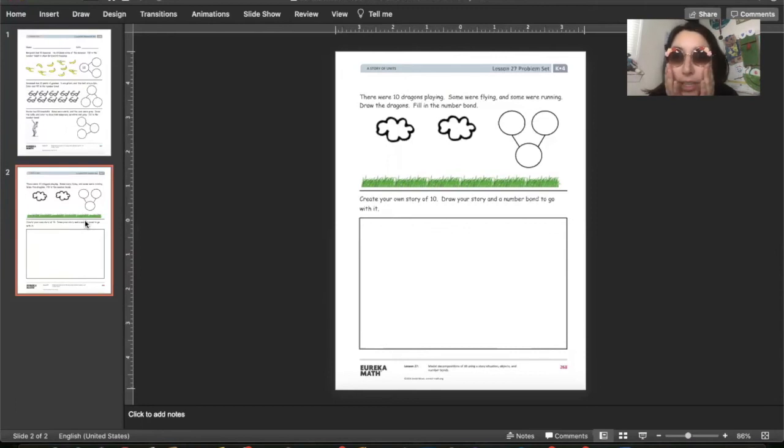The last part is create your own story and draw your story and a number bond to go with it. You can do it. I believe in you. And like I said, the six parents that have not completed the survey, get it done. All right. Bye, guys. Have a good day.